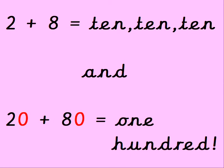2 add 8 makes 10, 10, 10, and 20 add 80 makes 100.